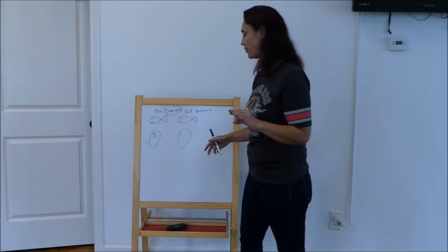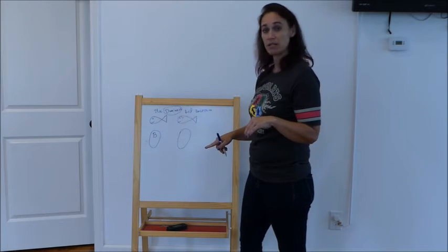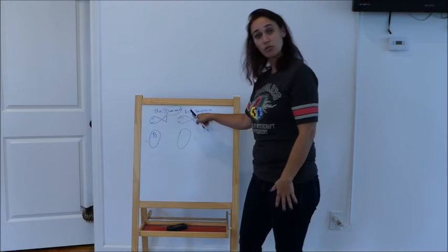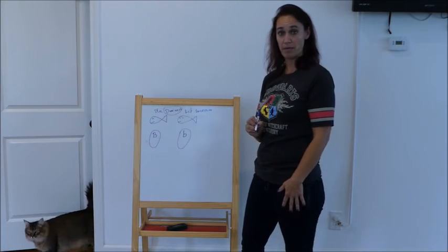So it has to be a B. Well, it can't be a capital B because that would mean dominant blue. To get the recessive red, we have to make it a lowercase b.